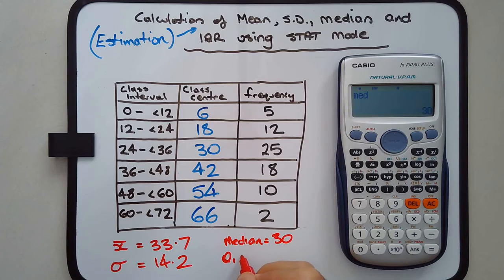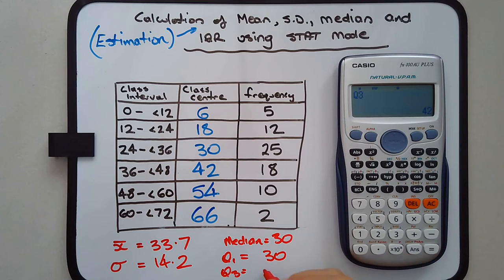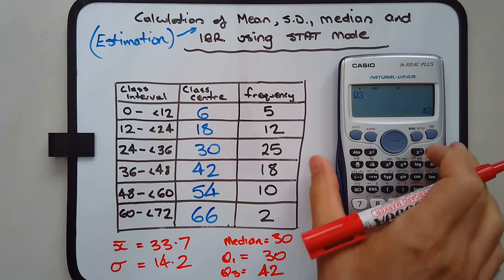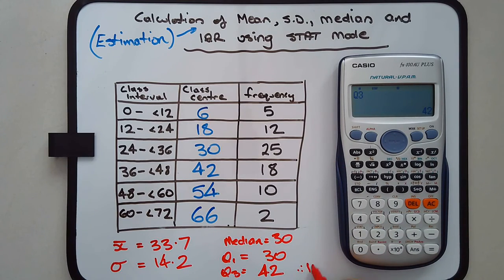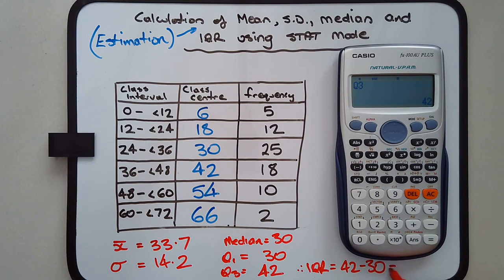We might as well work out Q1 and Q3. The interquartile range is just a matter of subtracting one from the other. Press number 6, then Q1 - press 3. Q1 is also 30. It's interesting that Q1 and the median are identical - that's possible. Number 5, Q3 is 42. Therefore, the interquartile range is the difference between Q3 and Q1: 42 minus 30, which equals 12.